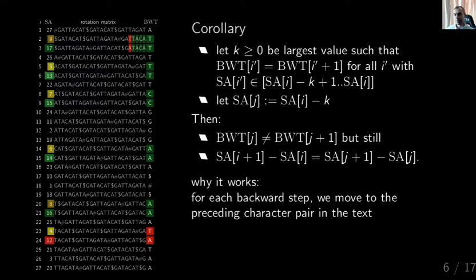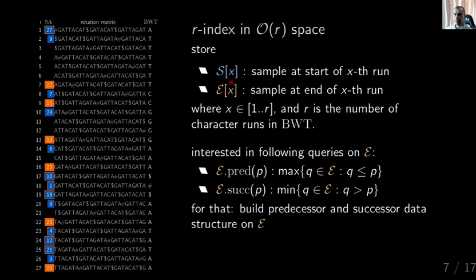The r-index stores suffix array entries at the borders of runs, called S_x and E_x for the start and end of the x-th run, where x is a value between 1 and r, and r is the number of character runs in the BWT. For computation of the suffix array, we are interested in predecessor and successor queries on E. For predecessor, we can return the actual element p if p is in E, while for successor we require a strictly larger value to be returned, just to make the mathematical formulation easier.